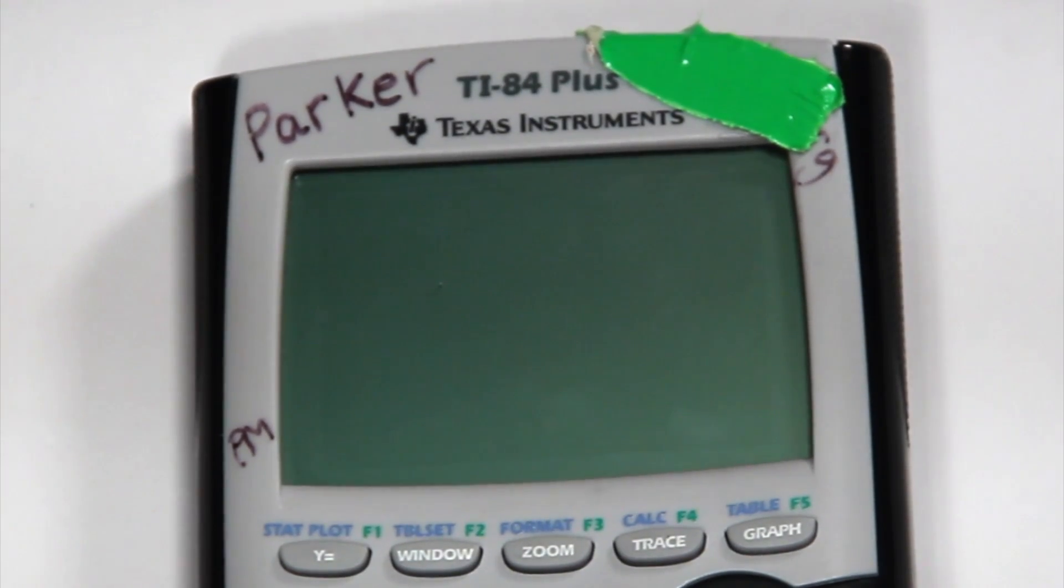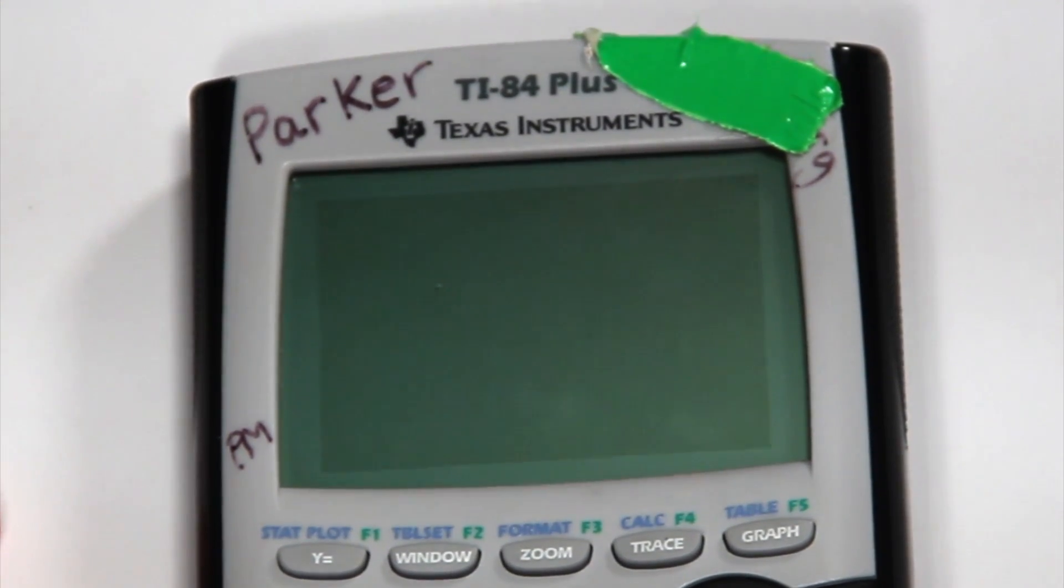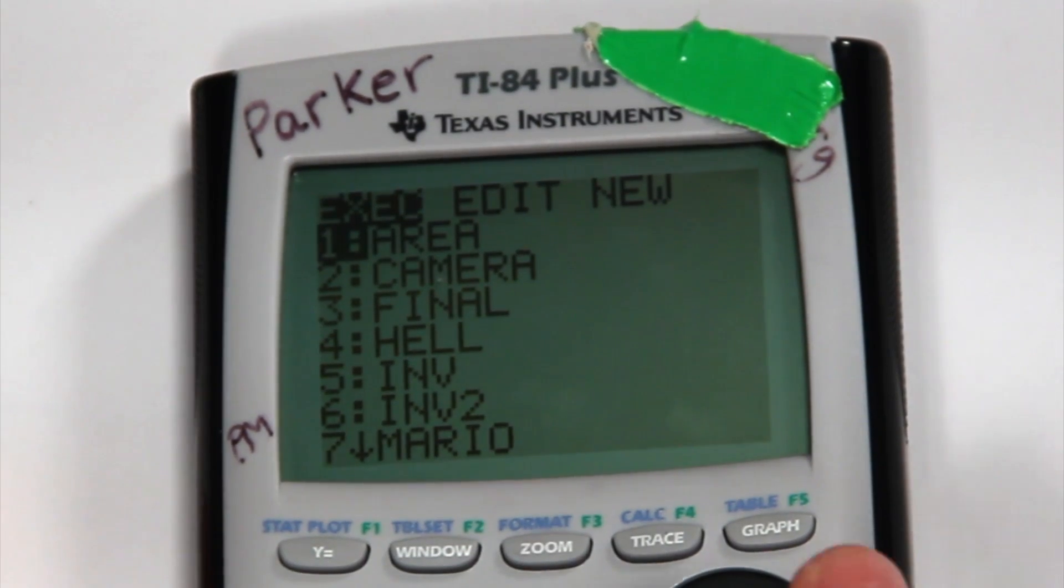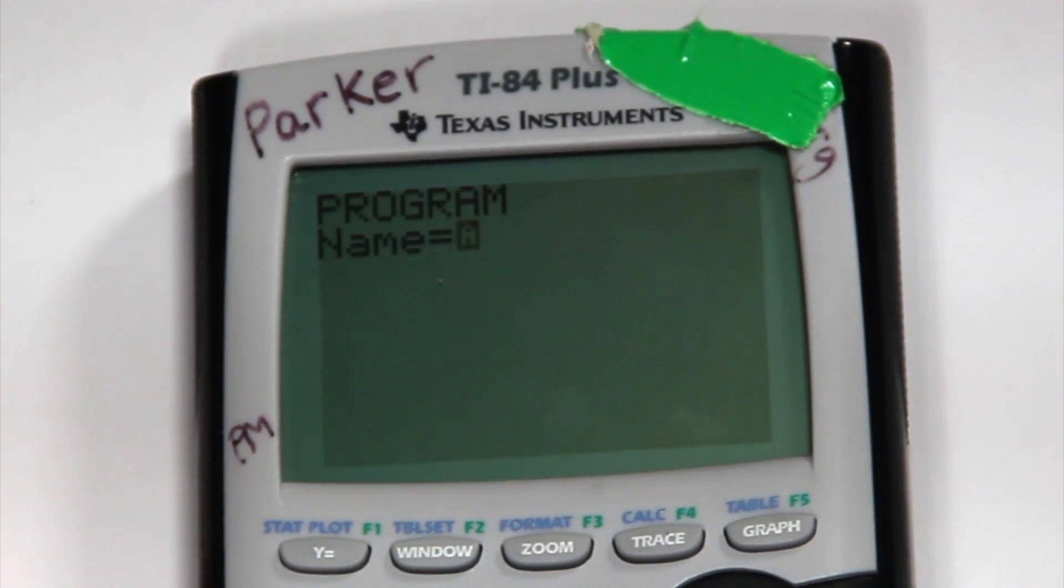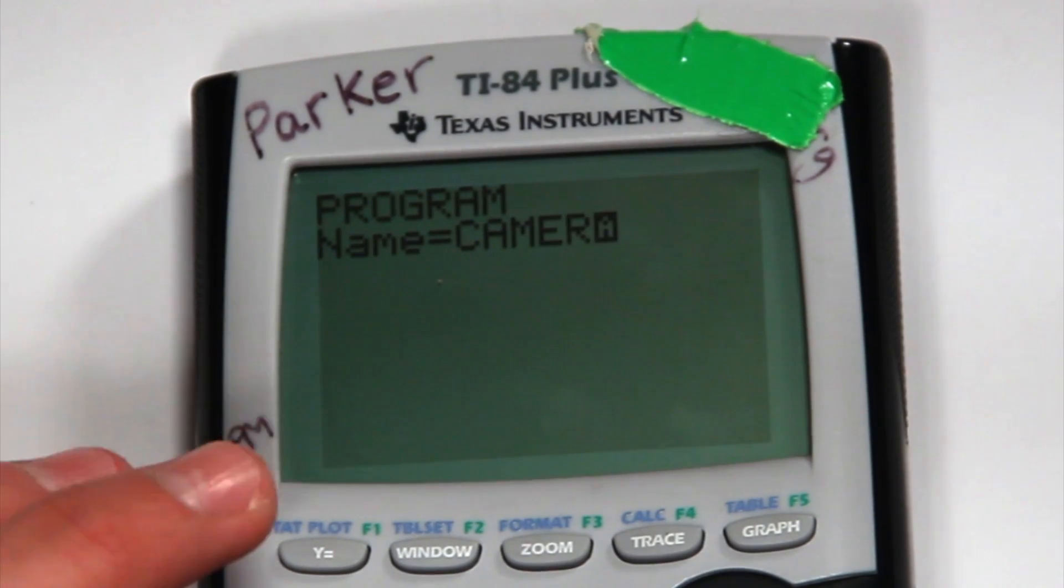So the first thing we're going to want to do is program our calculator. So go ahead and turn it on, go to program, new, and enter a name. I like to keep mine simple so I'm going to name it Camera just to be able to find it easy.